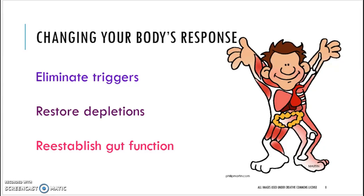The body responds to these various factors by launching an adaptive immune response. In order to begin the road to healing, you must first address the interferences and remove them. In Isabella Wentz's book 'Hashimoto's Thyroiditis: Lifestyle Interventions for Finding and Treating the Root Cause,' she recommends eliminating the triggers, restoring depletions, and re-establishing gut function. The first step is to eliminate the triggers, which can include infections, iodine, gluten, food intolerances, fluoride, and other toxins. Removing them will help quiet your immune system and reduce damage to your thyroid.